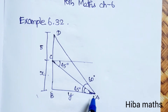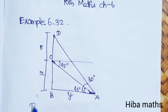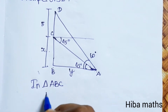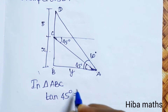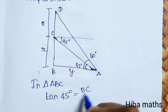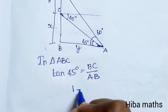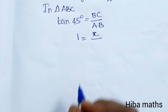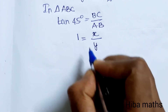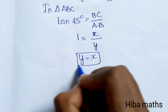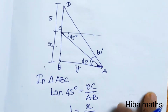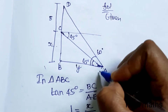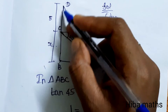First, in triangle ABC, tan 45 degrees is equal to opposite side BC divided by AB. So tan 45 degrees equals 1, meaning BC equals x and AB equals y, giving us y equals x. This is the first result. CD is given as 5 meters.